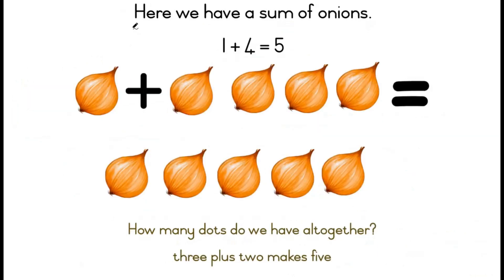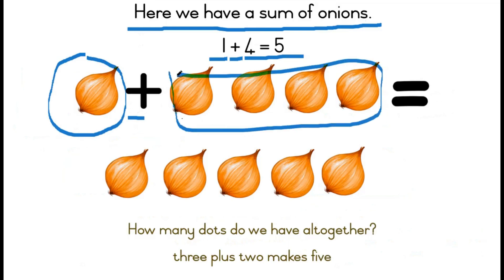Here's our last example. Here we have a sum of onions. One plus four equals five, which means one onion plus four onions gives us five onions.